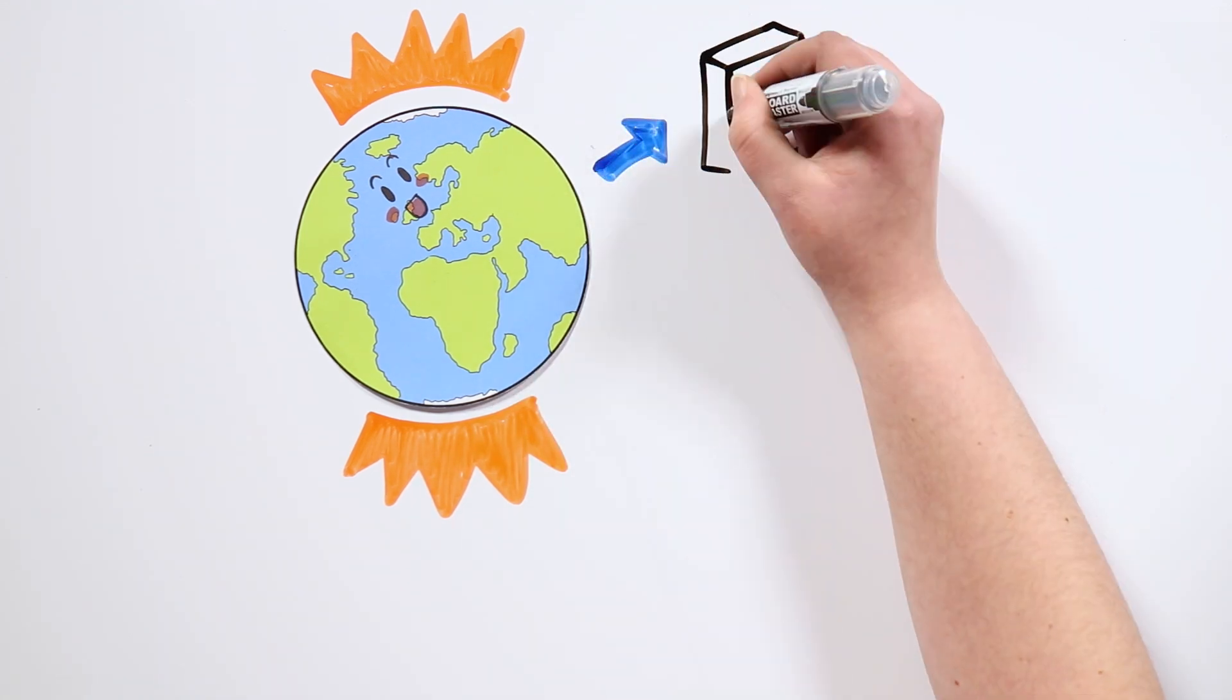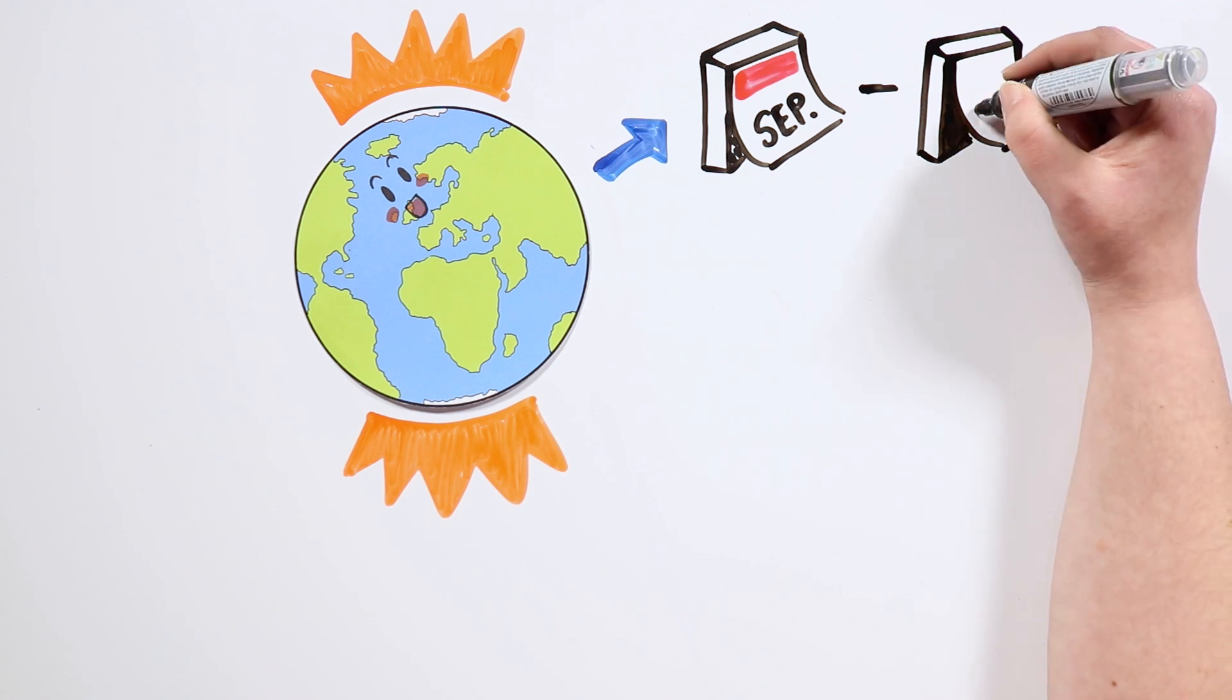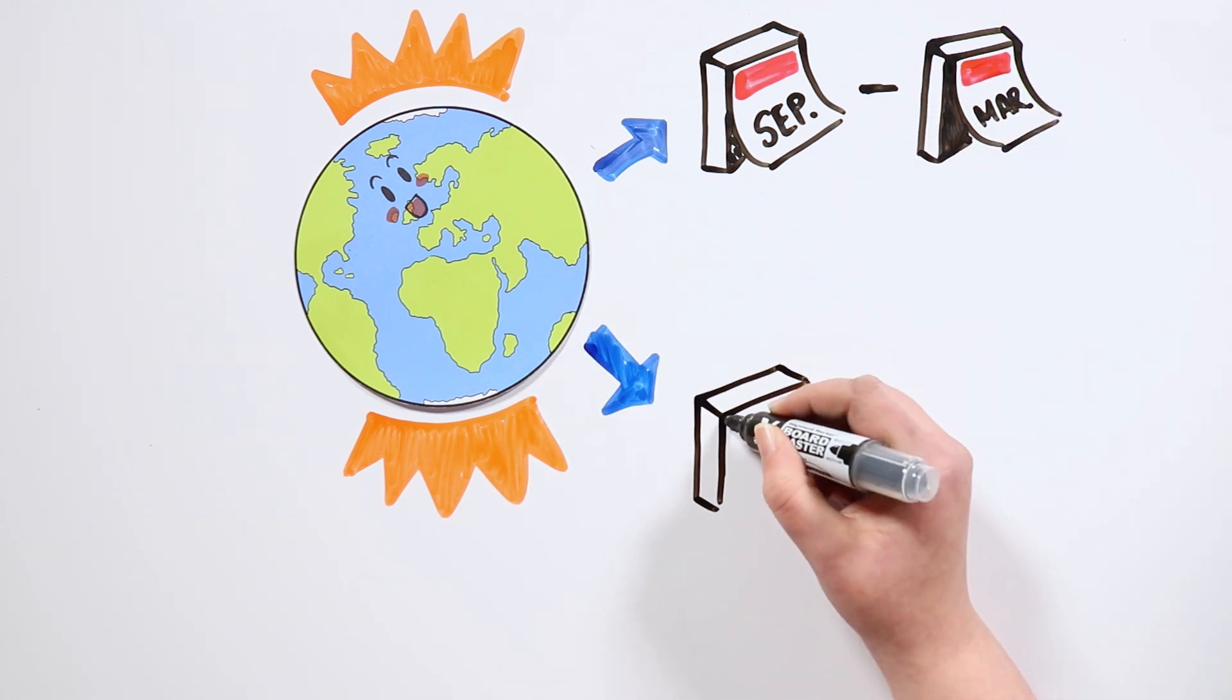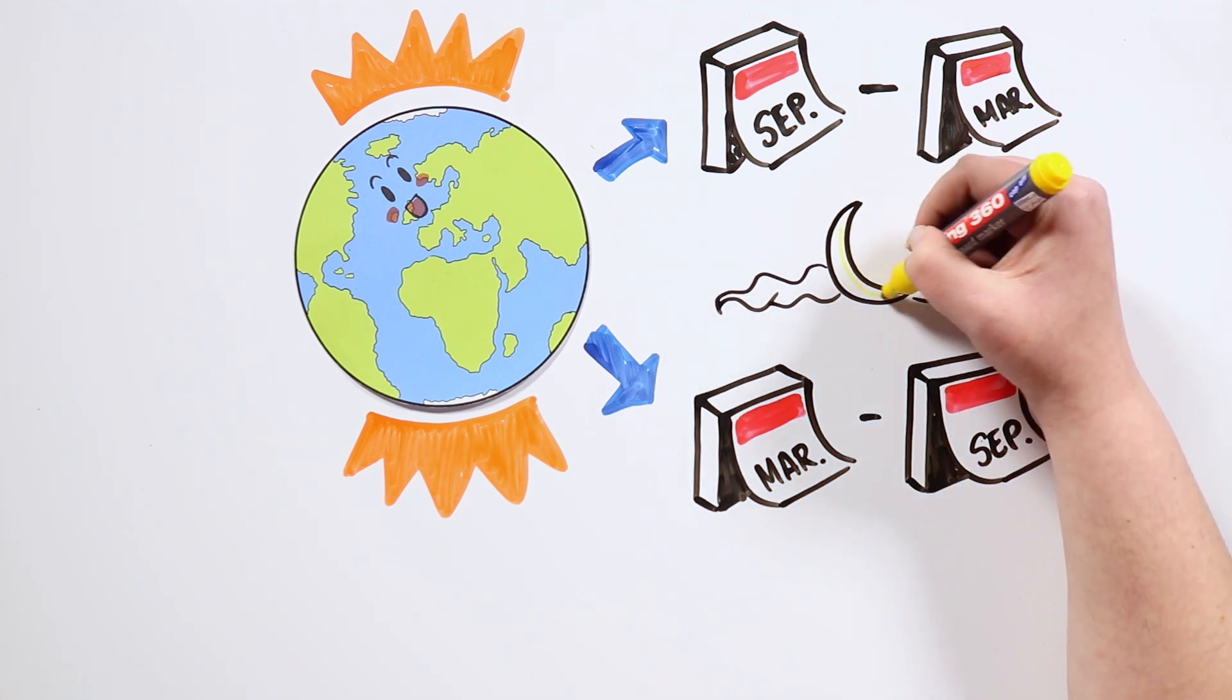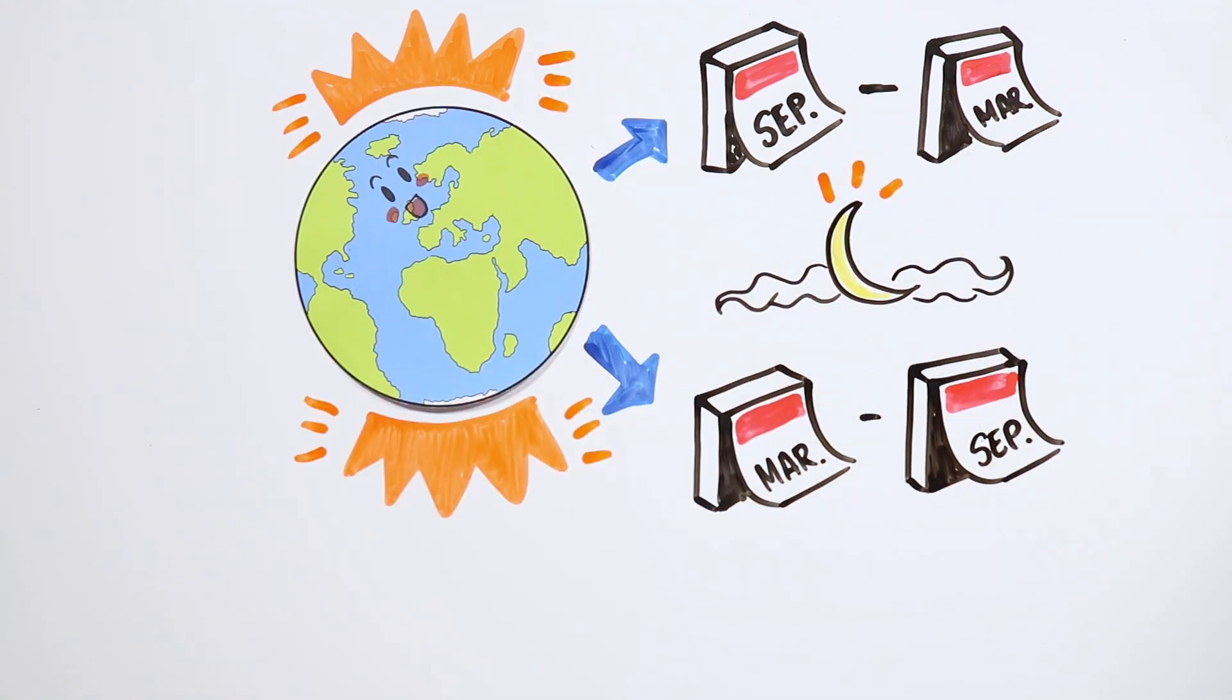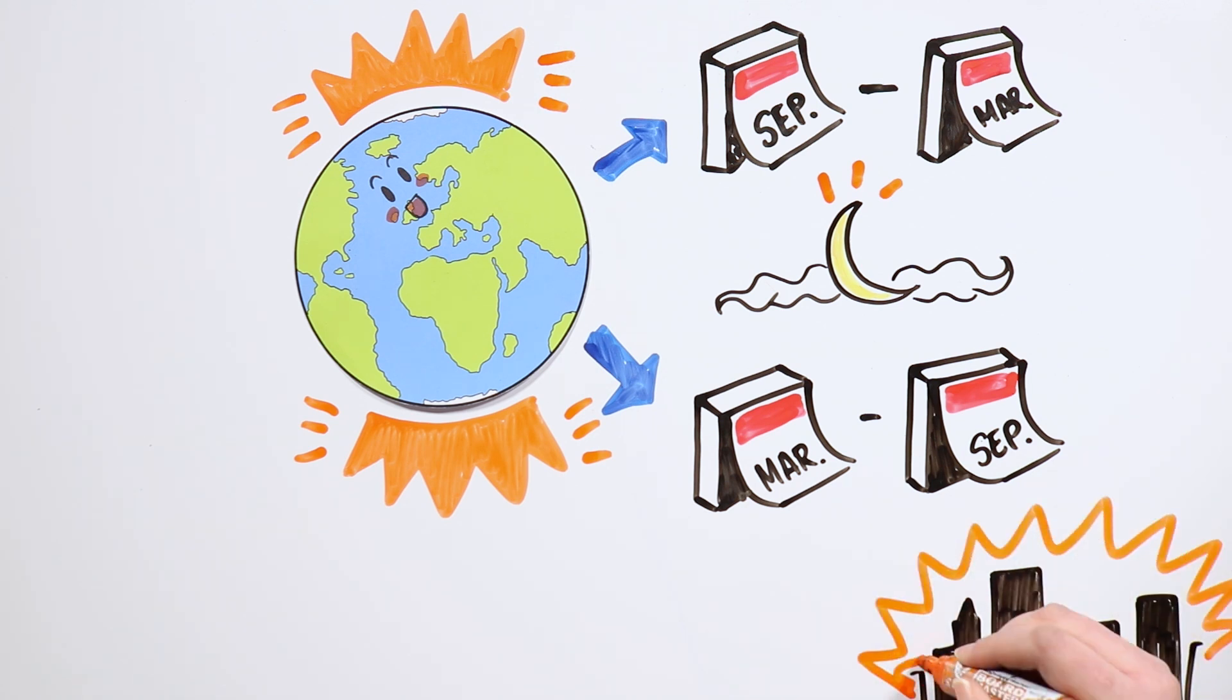The second one is that they can only be enjoyed at particular times of the year, from September to March in the north, and from March to September in the south. This is because they can only be seen at night, and because in winter the nights are longer in those parts of the world, it's easier to observe the auroras then.